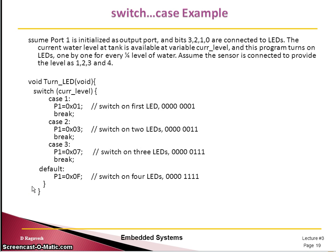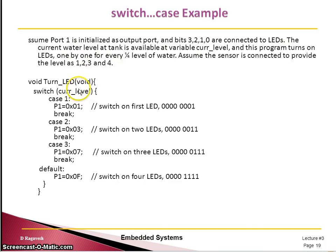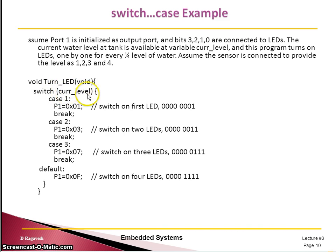Let's look at one example. Assume four LEDs are connected to a port. You want to read a particular variable value and based on that value turn on one, two, three, or four LEDs — like a bar graph. Here is how it can be done using a switch-case function in C: switch based on the value you want to branch on.